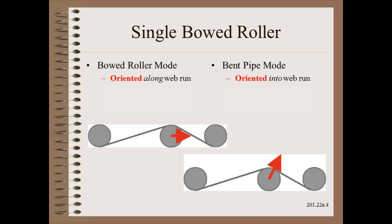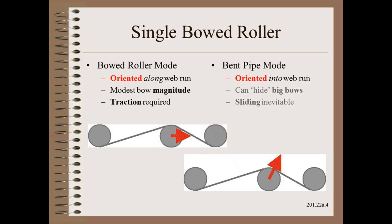The next two differences are vital to understanding how to make the spreader work in the two different modes. In the bowed roller mode, traction across the entire width is essential, and as such the bow magnitude must be modest. In the bent pipe mode, sliding is inevitable, and it is possible to hide big bows a little by turning the bow out of the web run a bit, as shown in the picture.